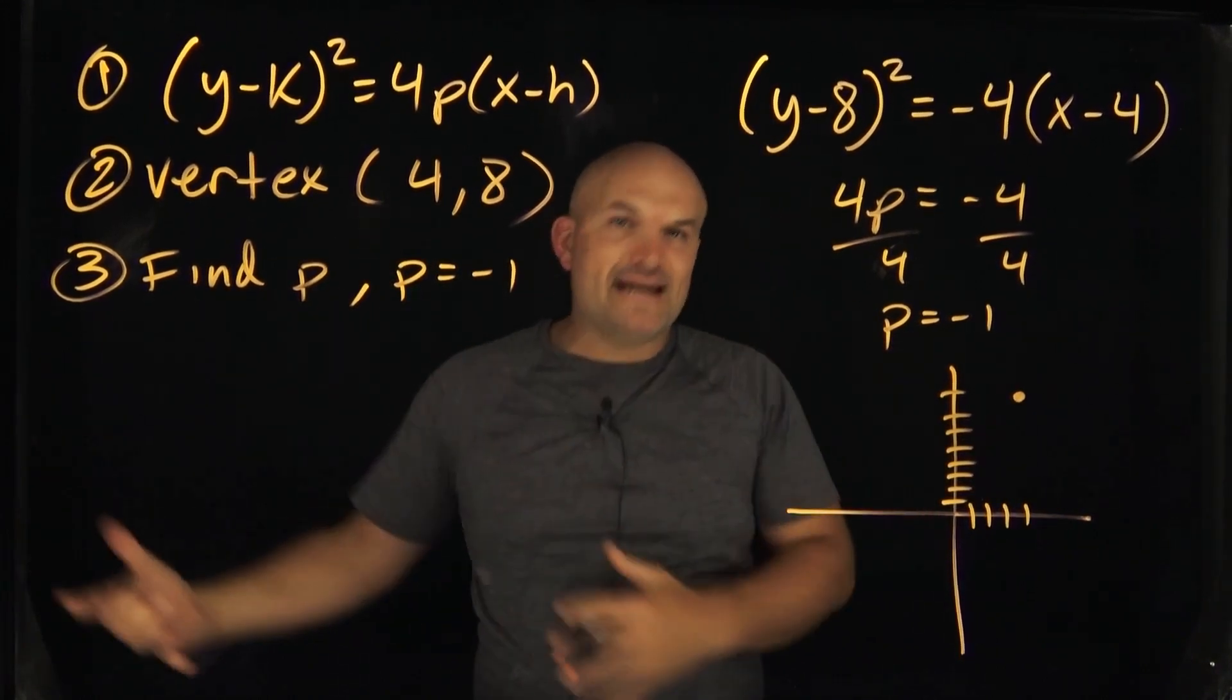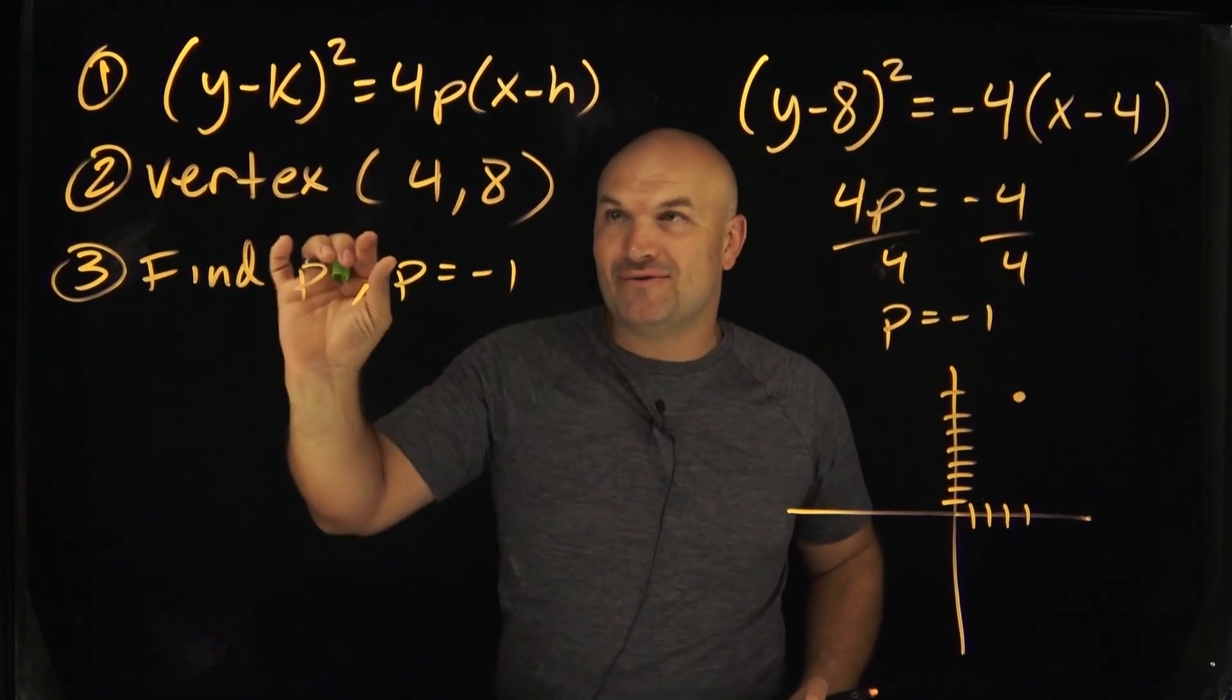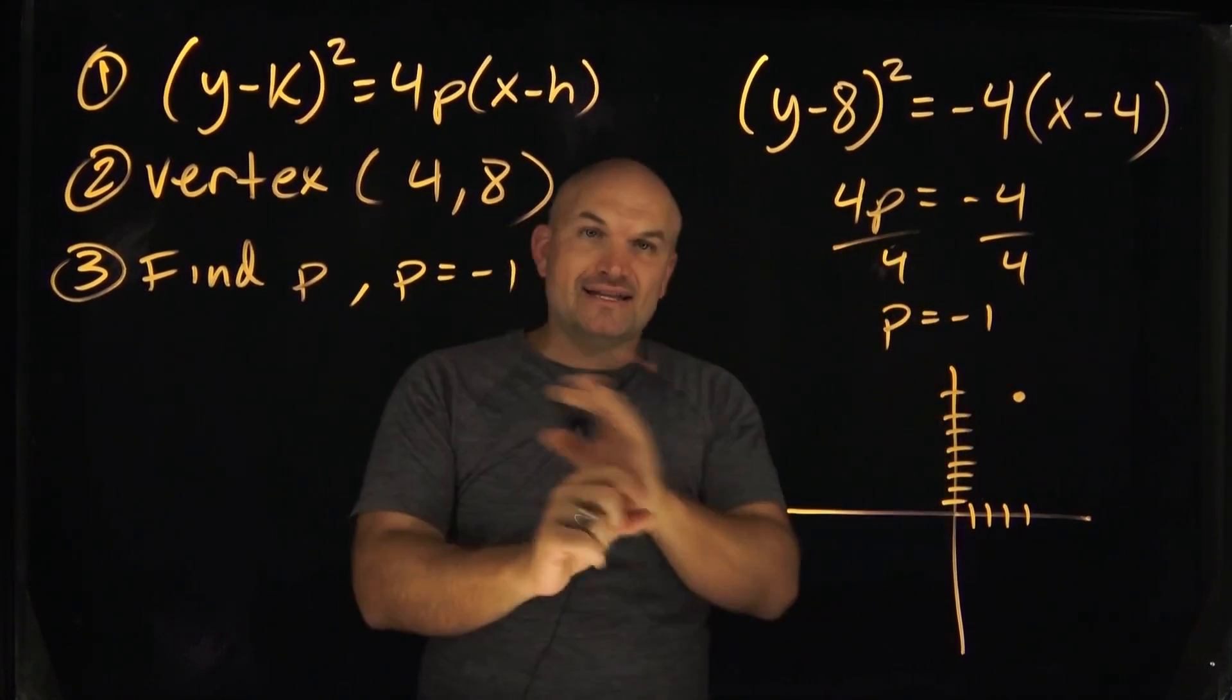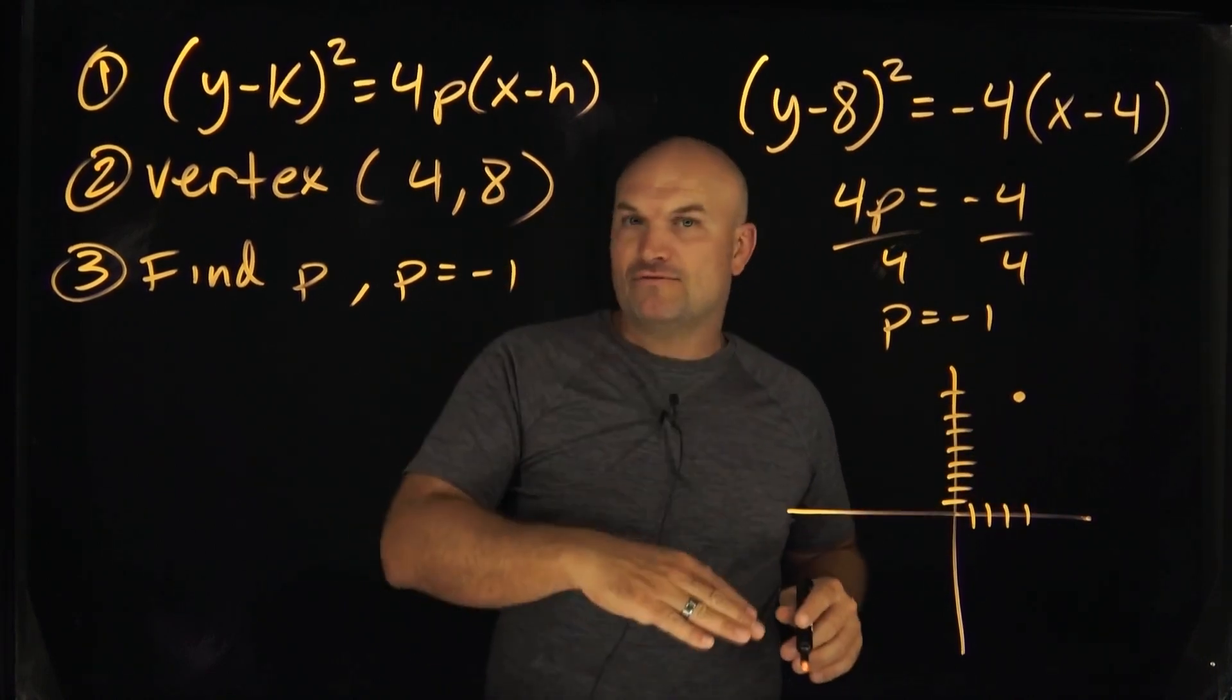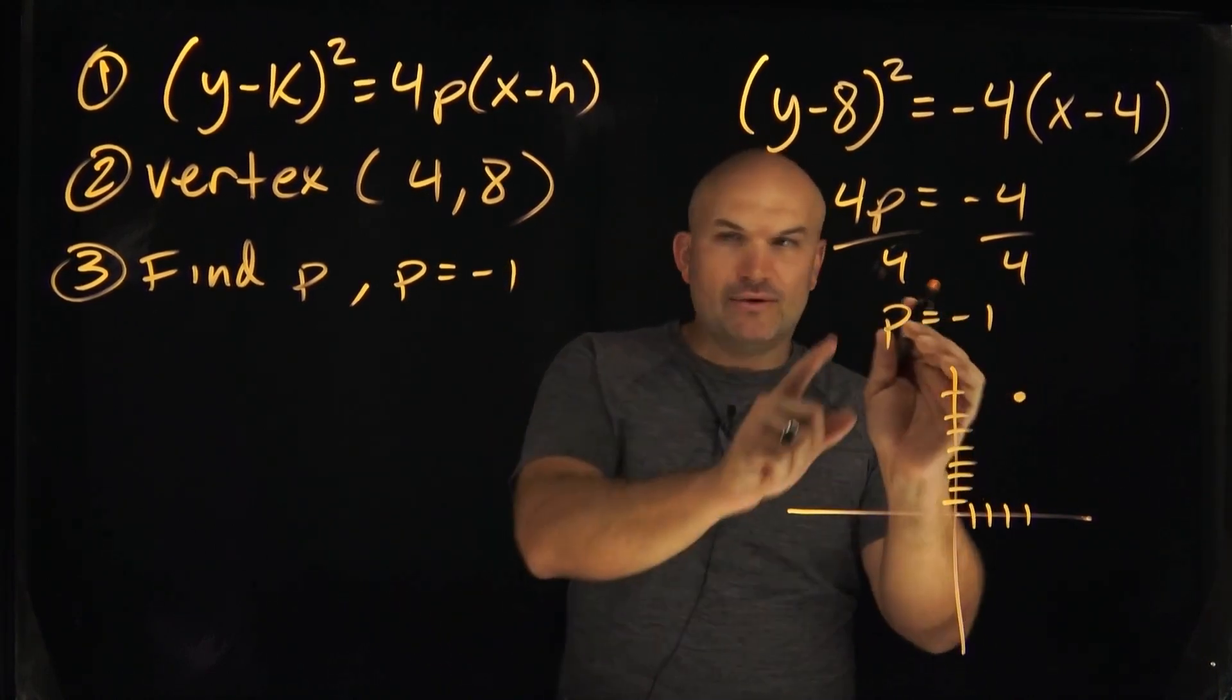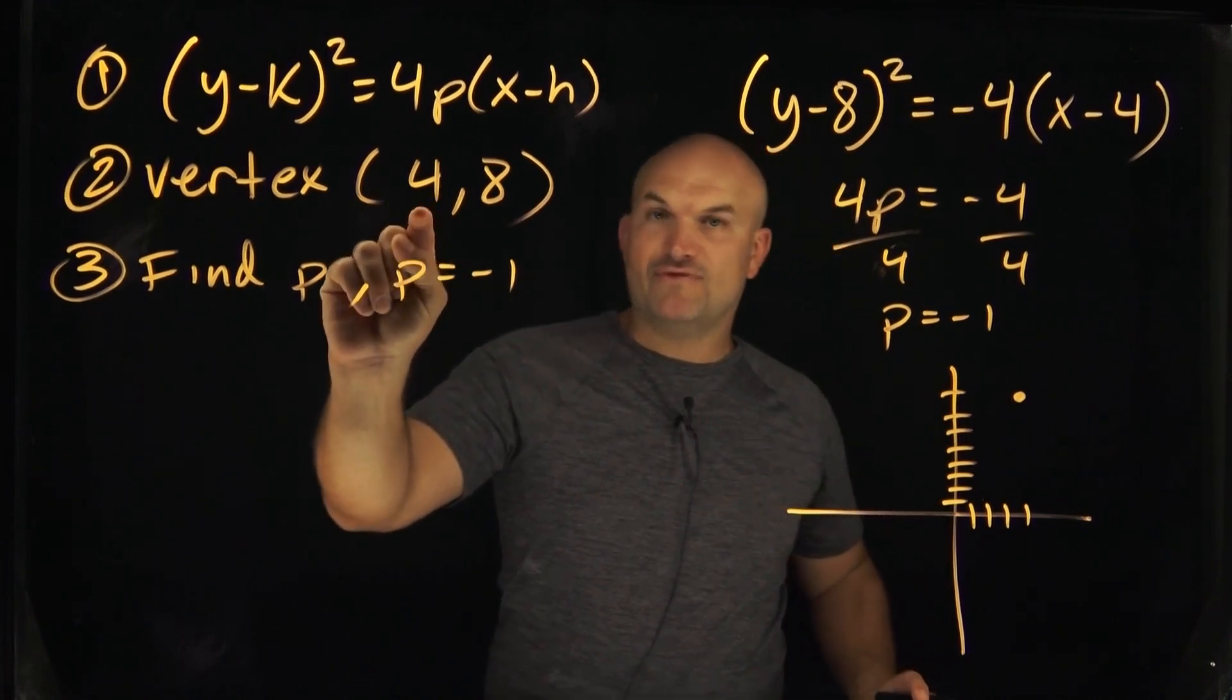So p tells us this orientation. Now remember the y is squared, right? So this is going to tell us that we know that it's either going to be an opening is left or right. So we're not going up or down for third value p. So we have a value of our x coordinate of our vertex is 4.